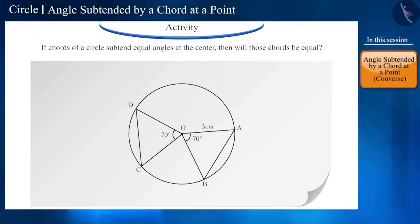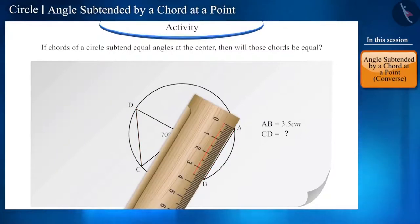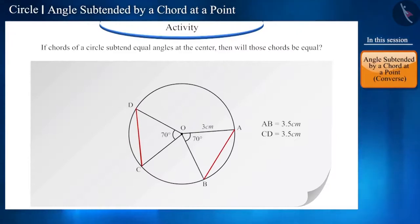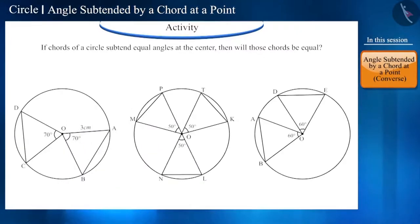Now, we have got chords AB and DC. Find their measurement. Friends, you can see that these two chords are equal. You can repeat this activity by taking more circles.